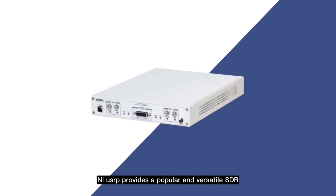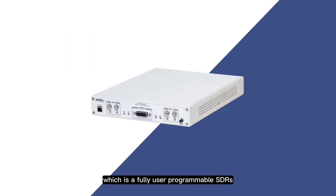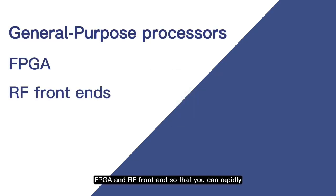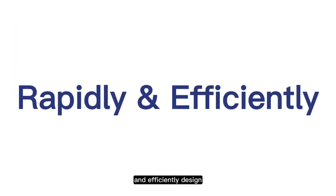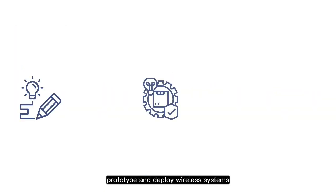NI USRP provides a popular and versatile SDR which is a fully user programmable SDR. It combines general purpose processors, FPGA and RF front-end so that you can rapidly and efficiently design, prototype and deploy wireless systems.